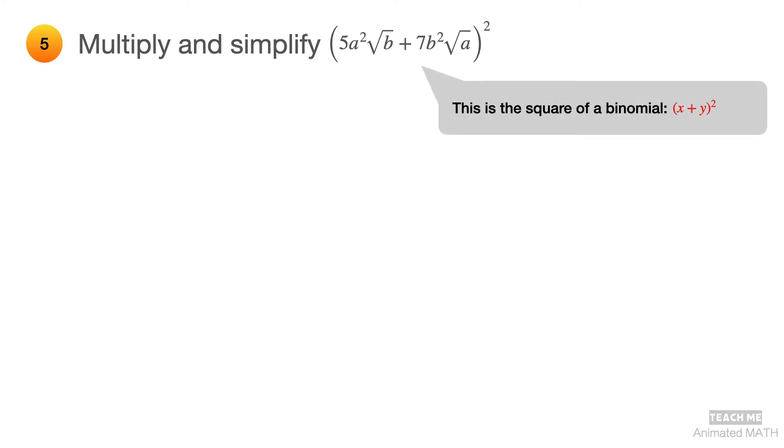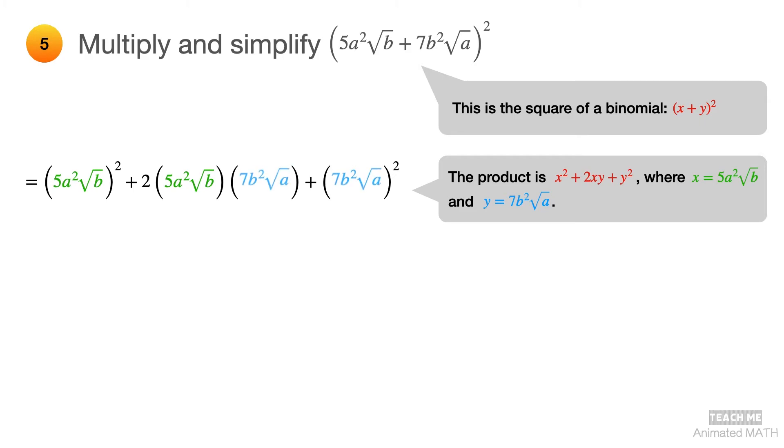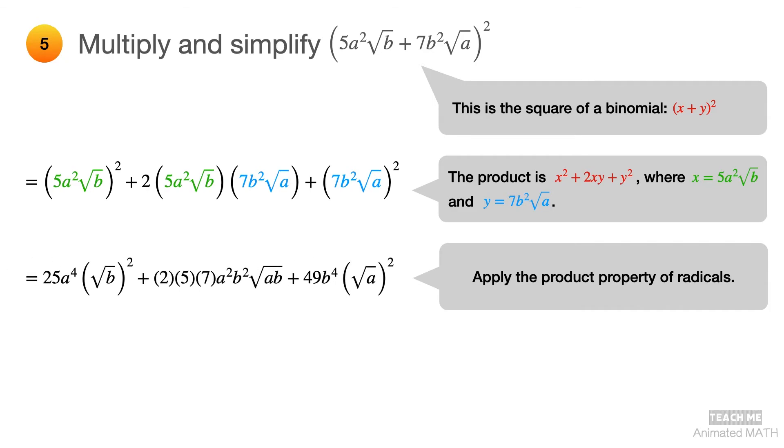This is the square of a binomial which follows the pattern x plus y squared. Its product is x squared plus 2xy plus y squared, but with x equal to 5a squared square root of b, and y equal to 7b squared square root of a. Apply the product property of radicals so that you can simplify the expression. And the final answer is 25a raised to 4b plus 70a squared b squared square root of ab plus 49ab raised to 4.